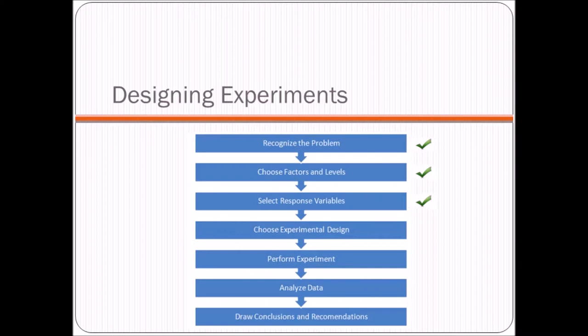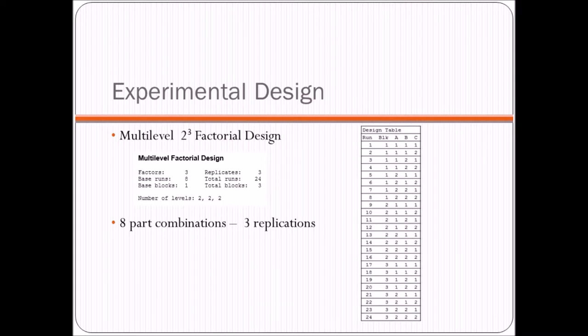Now that we've selected our response variables along with their factors and respective levels, we need to figure out exactly what type of experimental design we're going to use. So we have three factors each with two levels, and that gives us a 2 to the third factorial design. And what that basically means is that in order to test all of the combinations of factors and levels, we need eight different part combinations. And because these parts take quite a bit of time to print, we were hoping that three replications would be sufficient. So that would be a total of 24 different data points.